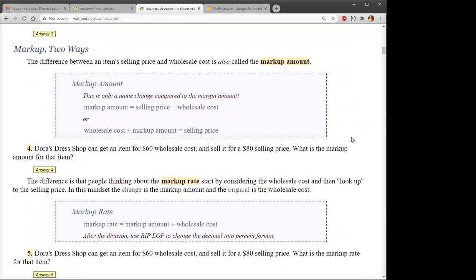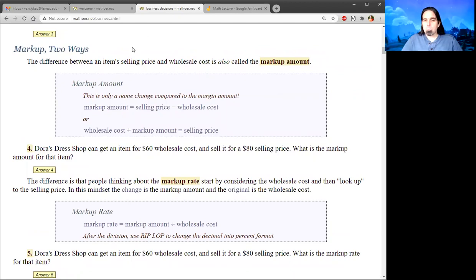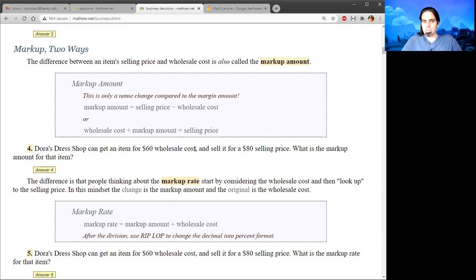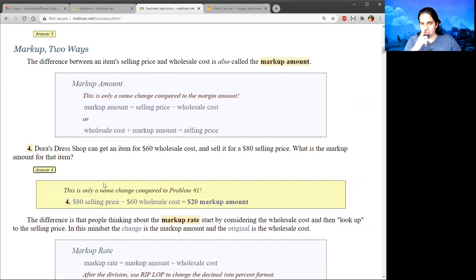Now we're going to confuse you. Other businesses say the difference between the selling price and the wholesale cost should instead be called the markup amount instead of the margin amount. It's the same thing. We're subtracting the two numbers. So problem four, where that dress shop has a $60 wholesale cost and an $80 selling price, if we ask what's the markup amount, it is still $20.